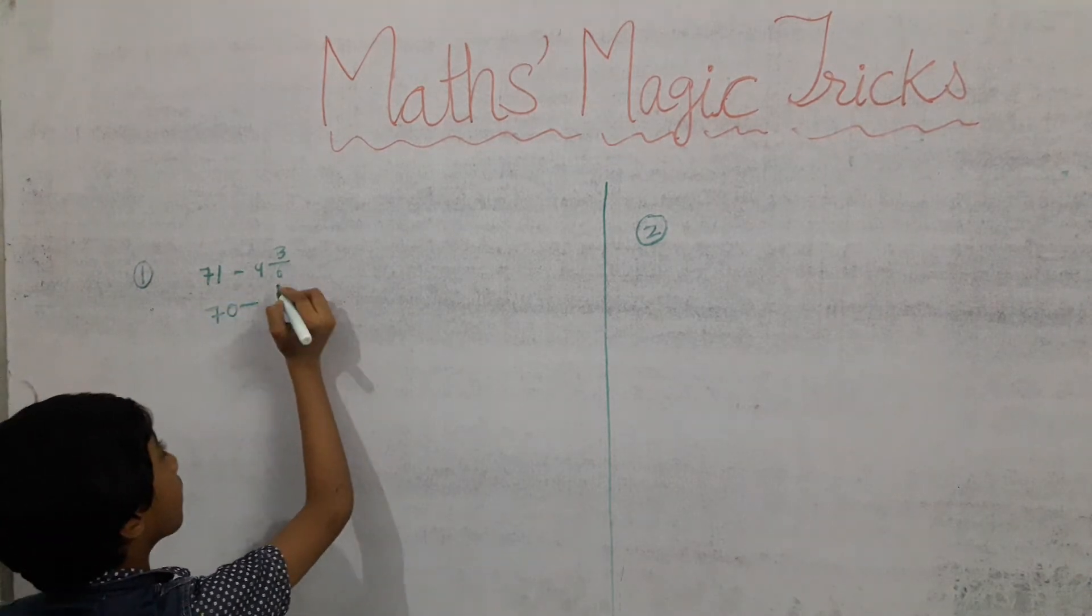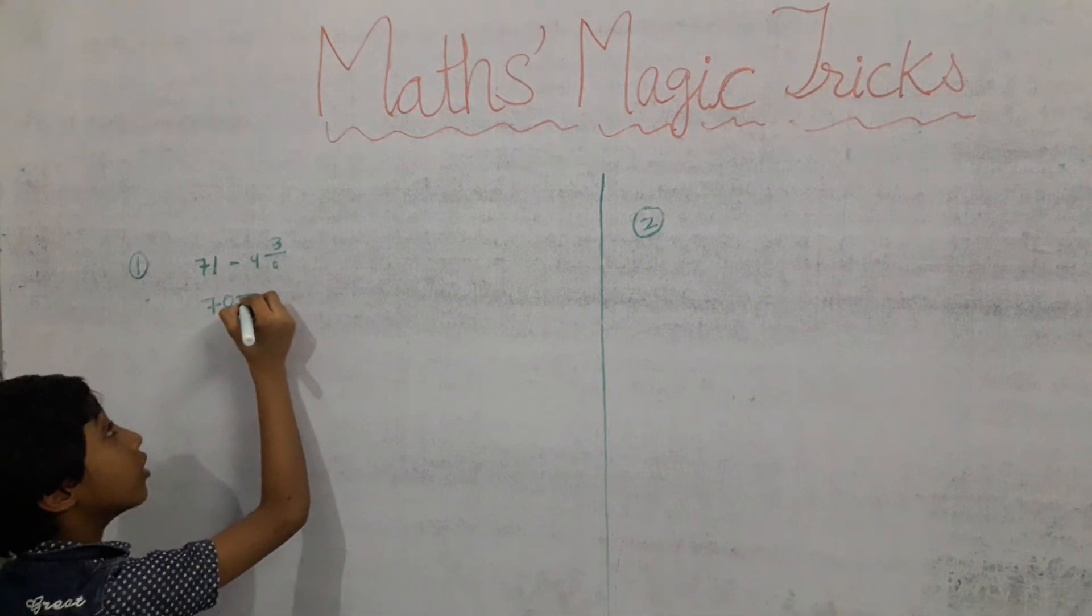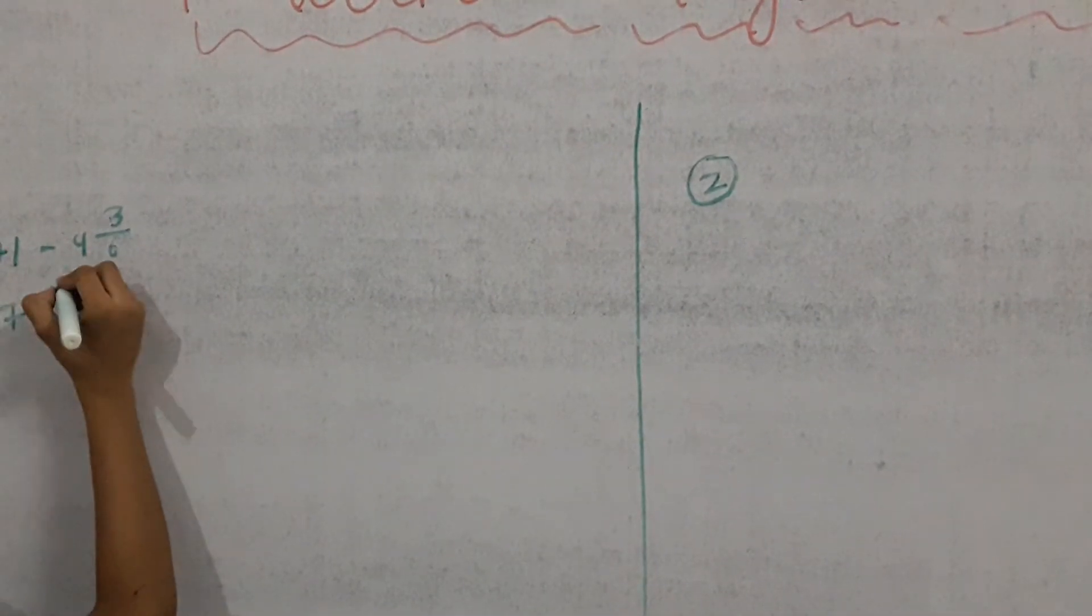Now the denominator of this number is six. So the denominator of this number will also six. And the numerator will also six.